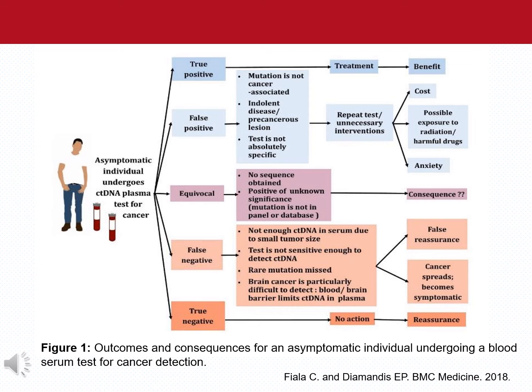In the last slide of my presentation, I show a number of different scenarios when an individual decides to perform a circulating tumor DNA test in plasma for detection of cancer. The outcome of this test could be a true positive — that is, molecular changes are identified in a patient with occult cancer — in which case the patient will benefit from early diagnosis, early treatment, and better clinical outcomes.